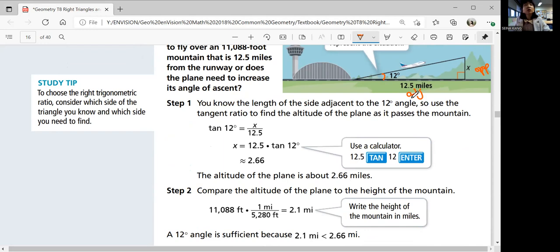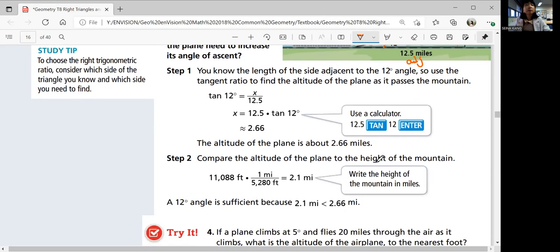Is x greater than 2.1 miles? Yes, 2.66 is greater than 2.1 mile. So it's going to be enough to go over the mountain. So a 12 degree angle is sufficient because 2.1 mile is less than 2.66 miles.